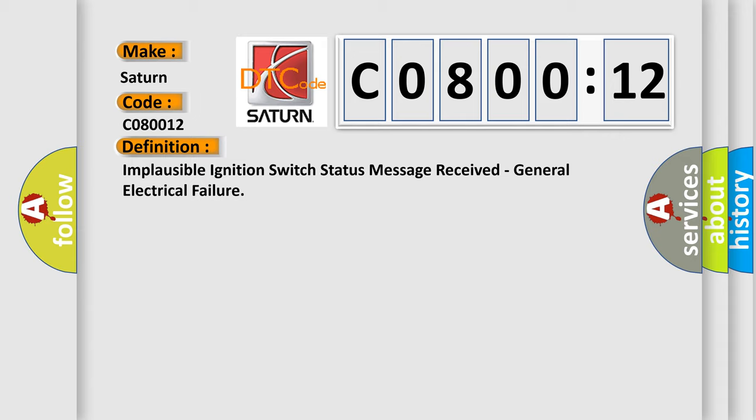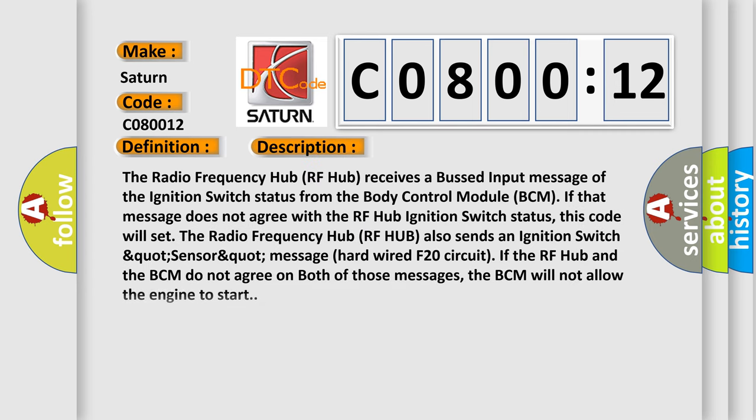And now this is a short description of this DTC code. The radio frequency hub (RF hub) receives a bus input message of the ignition switch status from the body control module (BCM). If that message does not agree with the RF hub ignition switch status, this code will set. The radio frequency hub also sends an ignition switch sensor message hardwired F20 circuit. If the RF hub and the BCM do not agree on both of those messages, the BCM will not allow the engine to start.